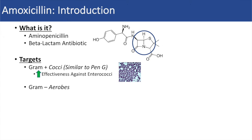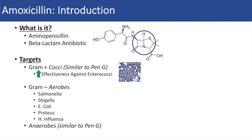Amoxicillin can also target gram-negative aerobes, such as Salmonella, Shigella, E. coli, Proteus, and H. influenzae. It can also have some effectiveness against anaerobes similar to penicillin G, as well. And amoxicillin can also be used for Listeria monocytogenes infections, as well.